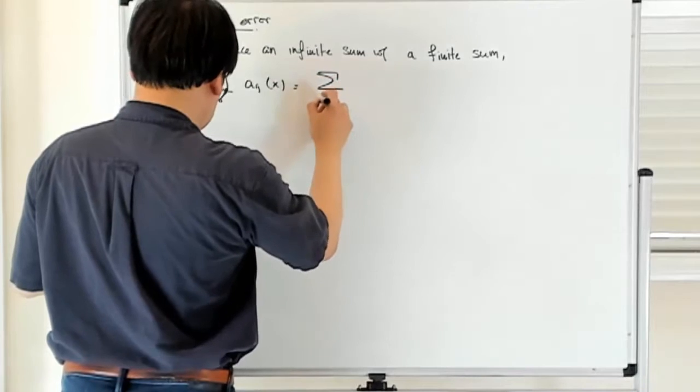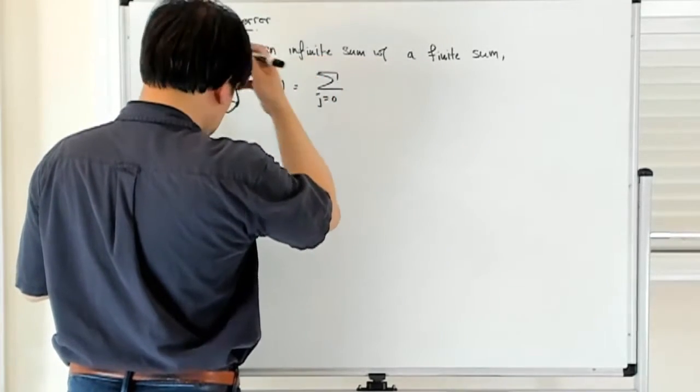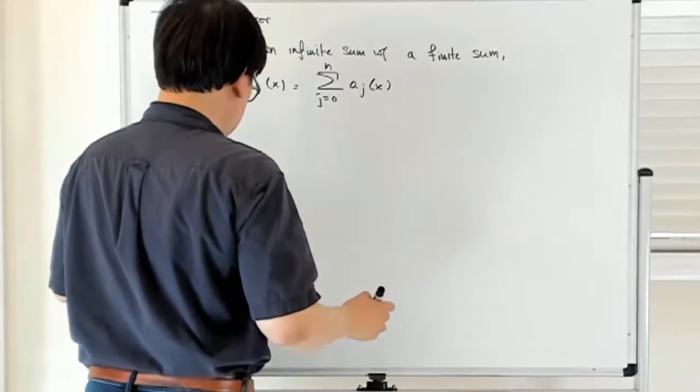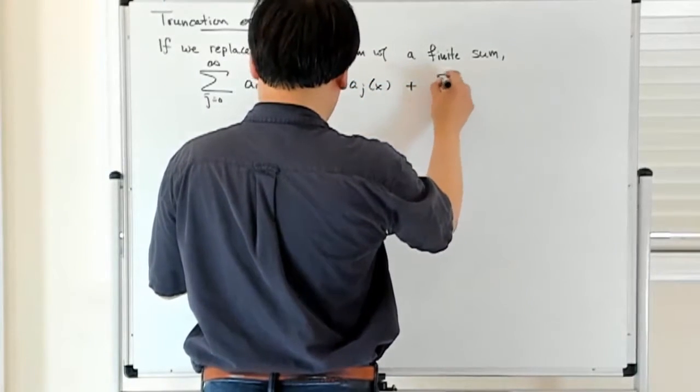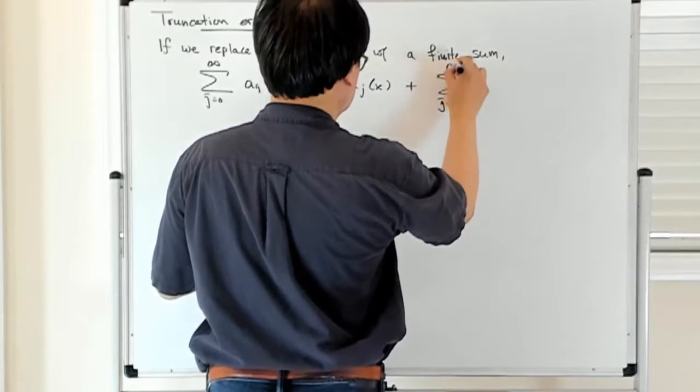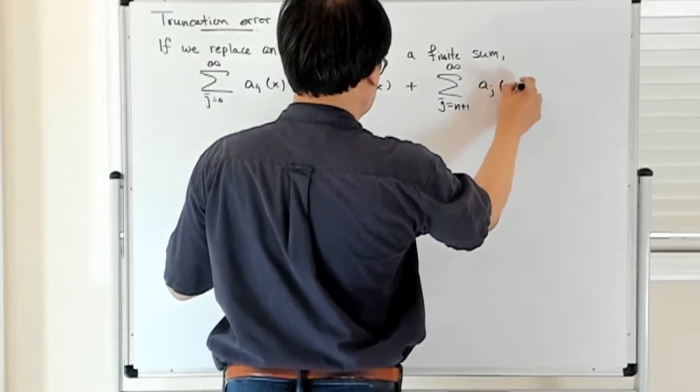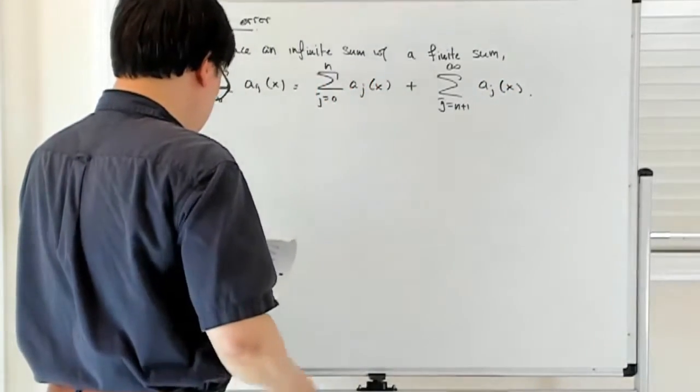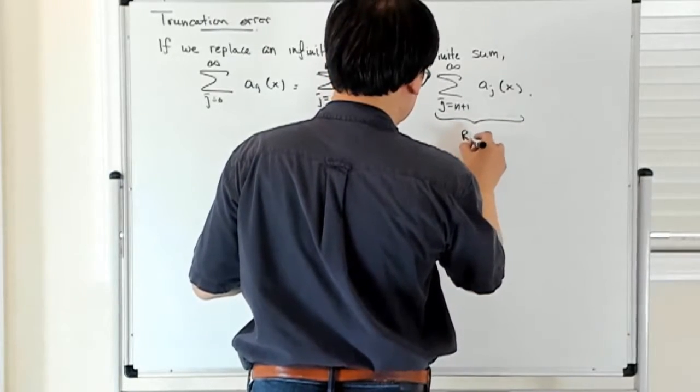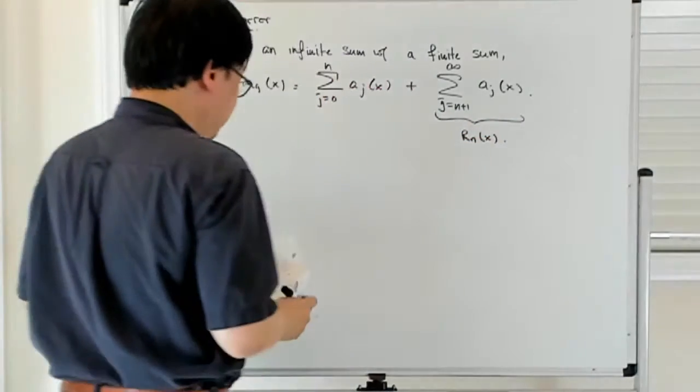Plus some sort of higher order terms. Then you refer to this thing here as your remainder term or truncation error term.